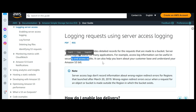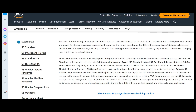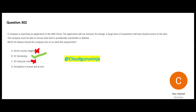S3 Lifecycle rules allow you to move from one type of storage to another in S3 - like from Standard to Intelligent Tiering, Standard-IA, One Zone-IA, and so on. And then there is Encryption - encryption in transit and at rest.